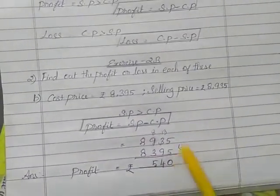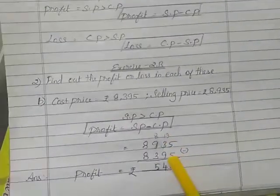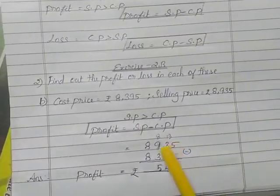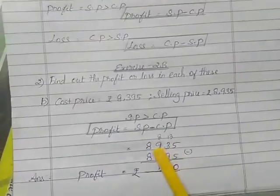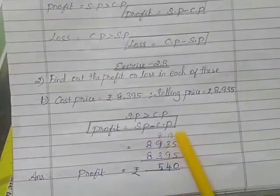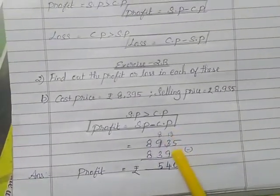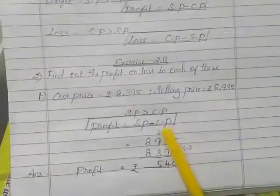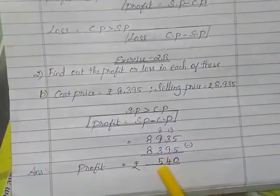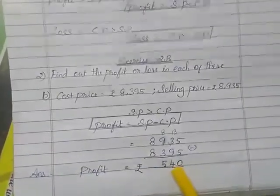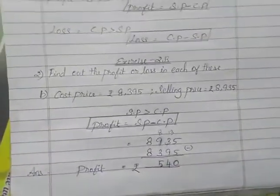5 minus 5, 0. 3 minus 9, we can't subtract, so we can borrow from the number before. The 9 converts to 8. The 3 converts to 13. 13 minus 9, that is 4. 8 minus 3, that is 5. What is the profit amount? 540.